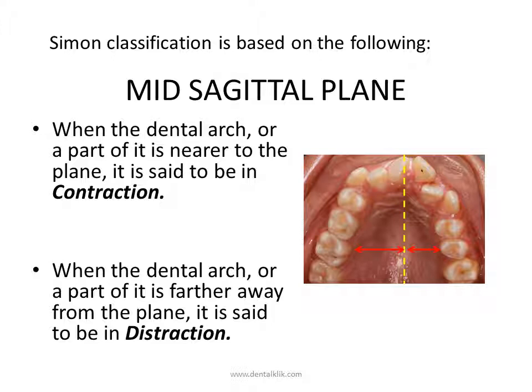The mid-sagittal plane is determined by points approximately 1.5 cm apart on the mid-palatal raphe. The raphe or median plane passes through these two points at right angles to the Frankfurt horizontal plane. This plane is used to determine deviations in the general form and width of the dental arches and the axial inclination of teeth in relation to the midline of the palate and the head.